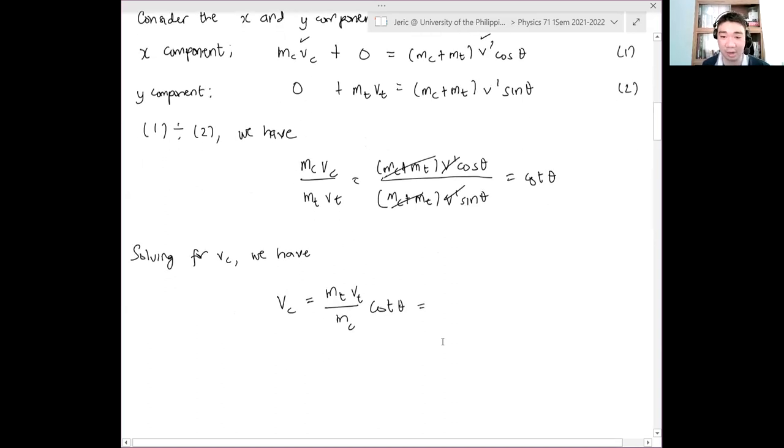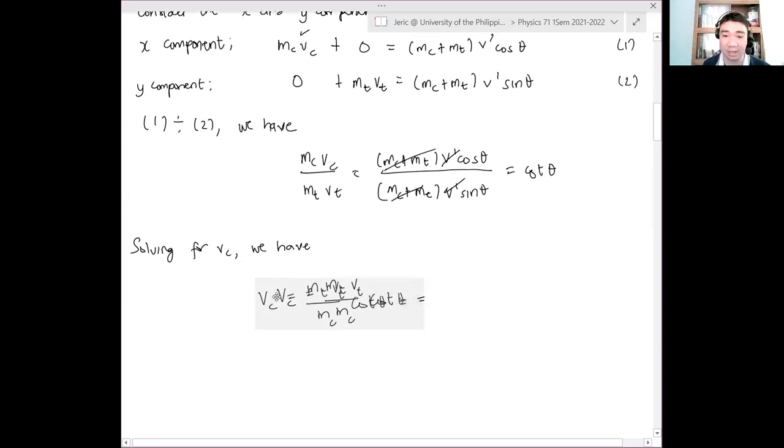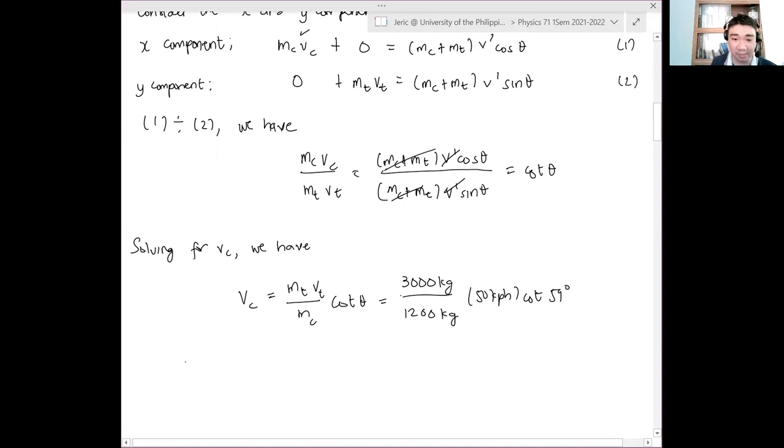So we'll just plug in the necessary numbers here. The mass of the truck is 3,000 kilograms if I remember correctly. This is 3,000 kilograms divided by the mass of the car is about 1,200 kilograms. The velocity of the truck initially is 50 kph. So you don't need to convert this because there's no other velocity with different units. And then, cotangent of 59 degrees. So, by substituting these variables, therefore, vc is about 75 kph.